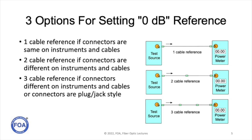If the cable plant has LC connectors and our test equipment has SCs, we need a two cable reference. In this case, we use reference cables that have SC connectors on one side to mate with the test equipment and LC connectors on the other side that mate with the cable plant under test. Then we connect the SC ends to the instruments and the LC connectors to each other to make the 0 dB reference. Note that there is a connection between the two reference cables included in the reference, which will affect the measurement.